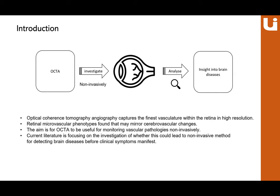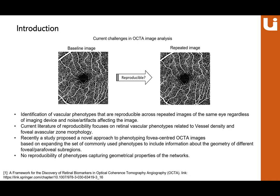Before we get there, there are some challenges in OCTA. One being reproducibility — how reproducible a phenotype is between a baseline image and a repeated image. We know there will be biological changes in the person, but we need to identify vasculature phenotypes that are reproducible across repeated images of the same eye using the same imaging device, regardless of noise and artifacts in image capture.